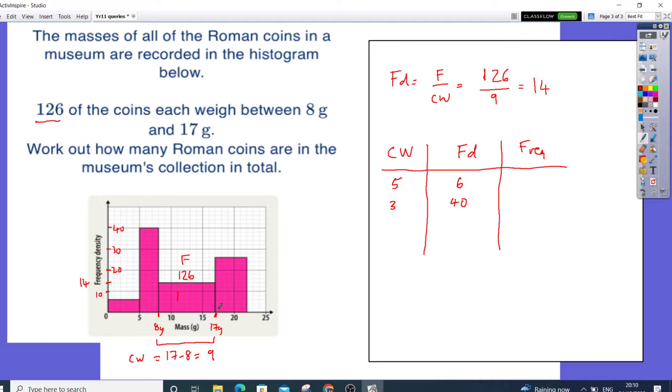So this comes from, well, we already know that's going to be going from, the gap there is going to be 9. And we already know, that's 14, we worked it out, and we know that that's already got 126 coins in there. We've been told that from the question.